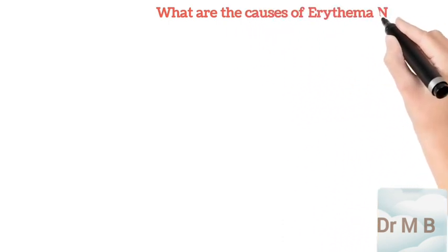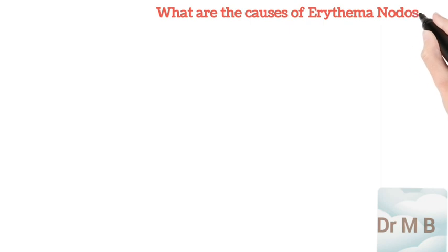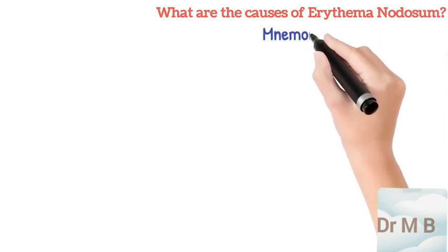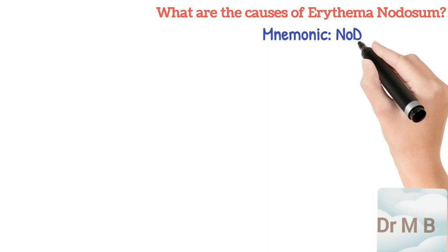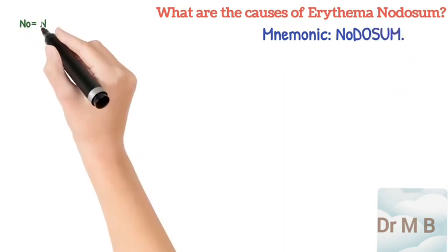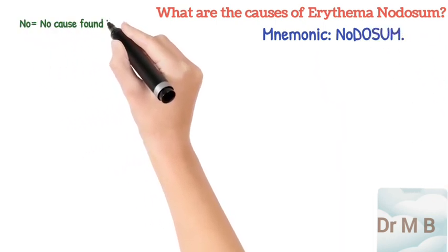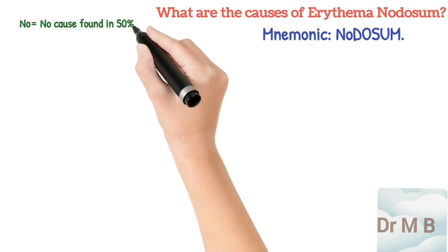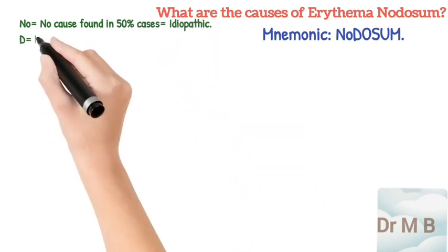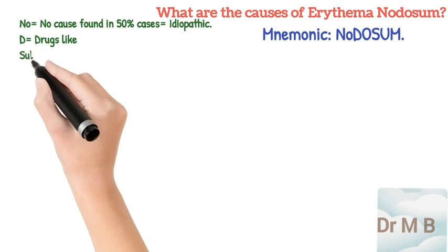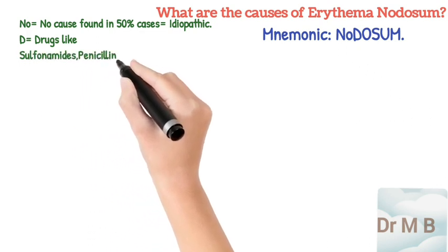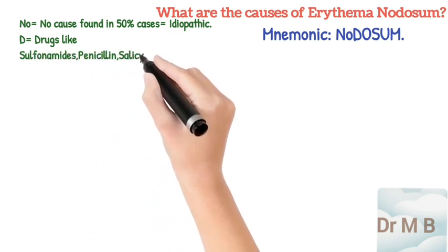If a patient presents to you with erythema nodosum, what causes should come to your mind? Remember the causes from the mnemonic NODOSUM. N-O stands for 'No Obvious Cause', meaning it is idiopathic in up to 50% of cases.